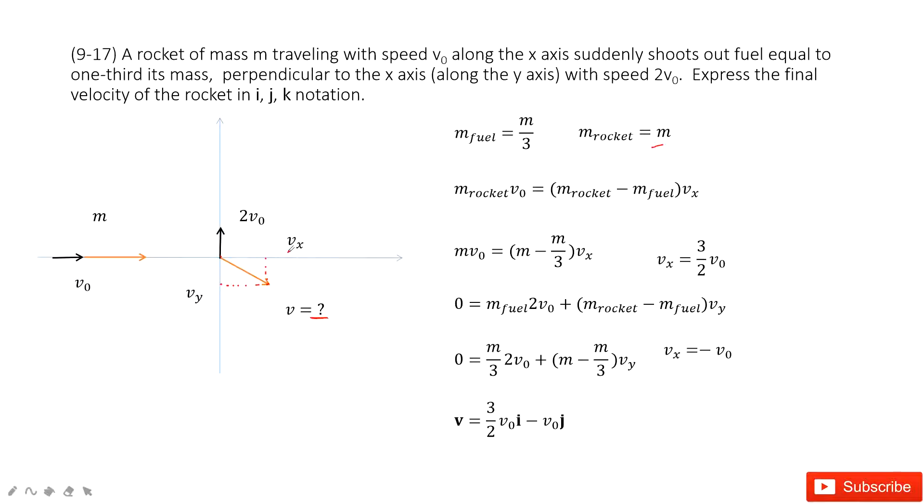Now you can see for the rocket and the fuel, no external force acts on this system. The linear momentum is conserved. And so the linear momentum is conserved both horizontally and vertically. As we know, momentum is a vector.